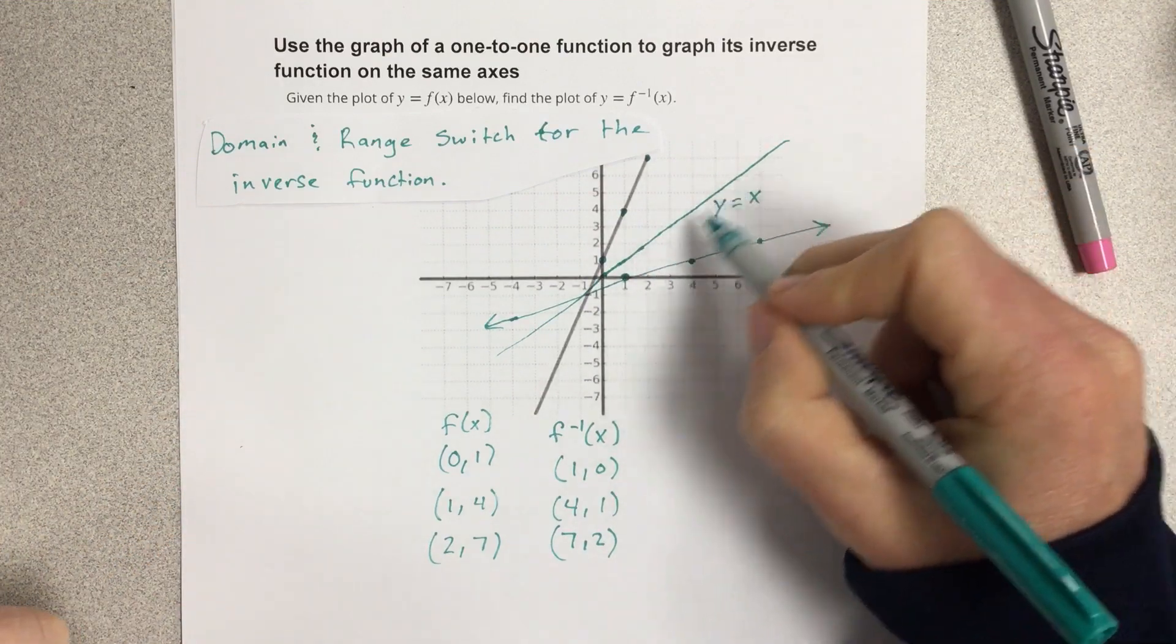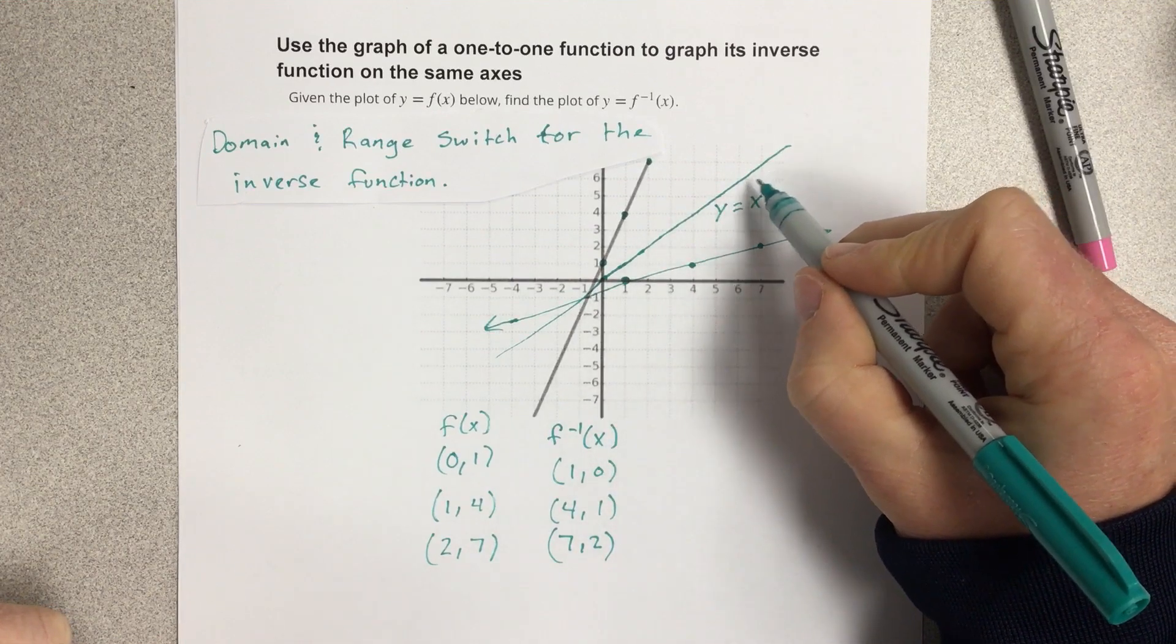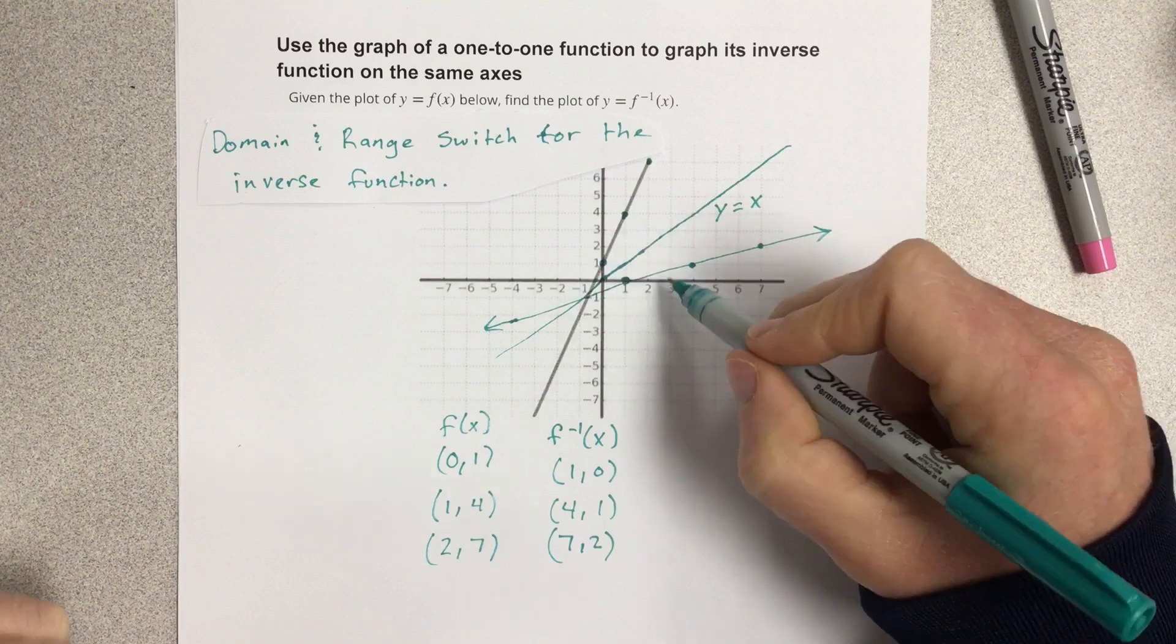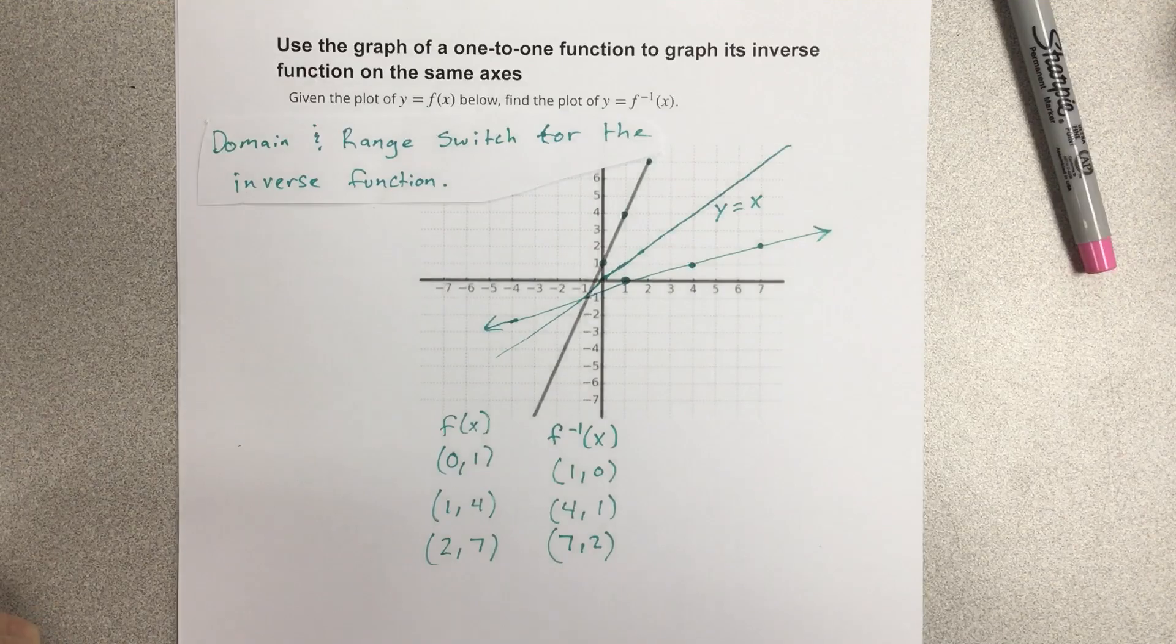it's going to split the two inverse functions every single time, no matter what graph we have. That's one way to check to see if you've done it right: just draw y equals x and see, am I the same on each side? You can tell that they are definitely reflected across that.